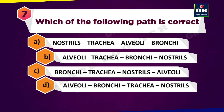Which of the following paths is correct? A. Nostrils → Trachea → Alveoli → Bronchi, B. Alveoli → Trachea → Bronchi → Nostrils, C. Bronchi → Trachea → Nostrils → Alveoli, D. Alveoli → Bronchi → Trachea → Nostrils.